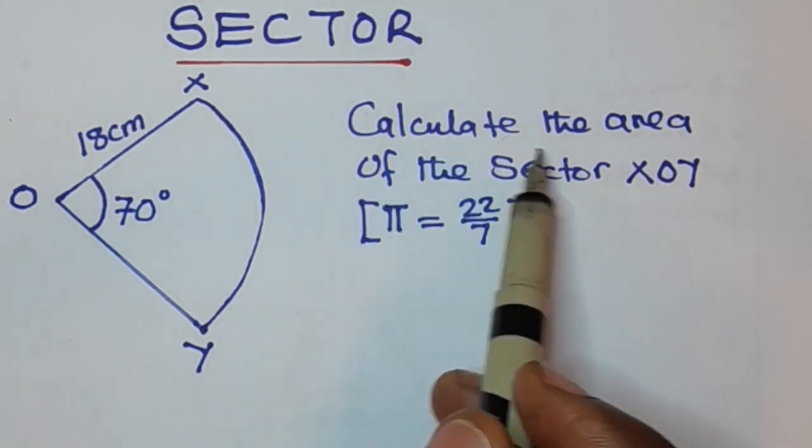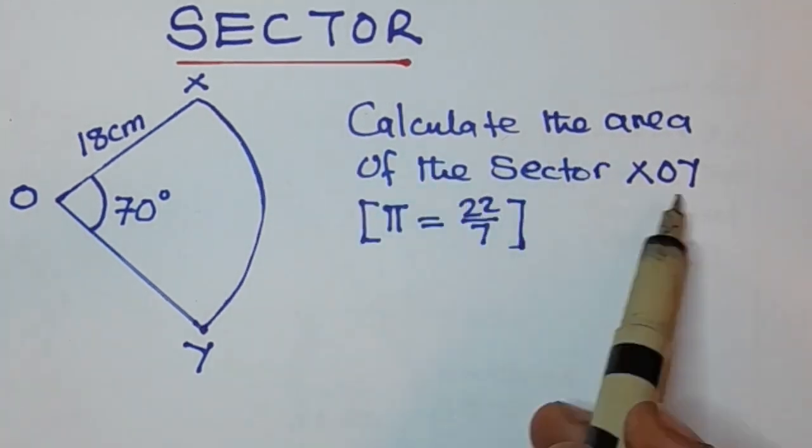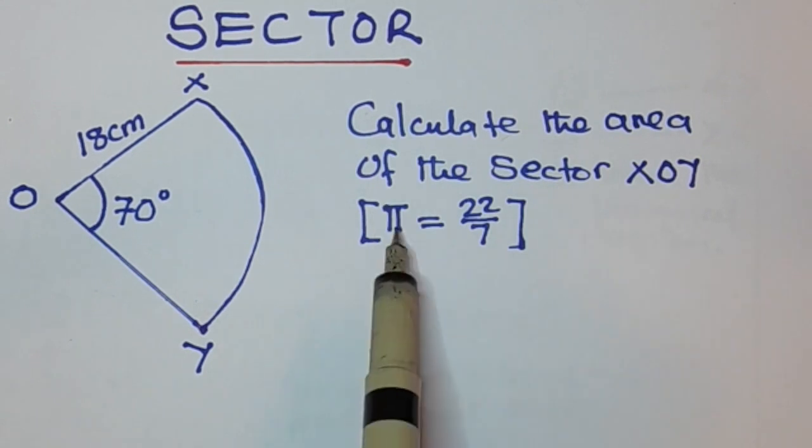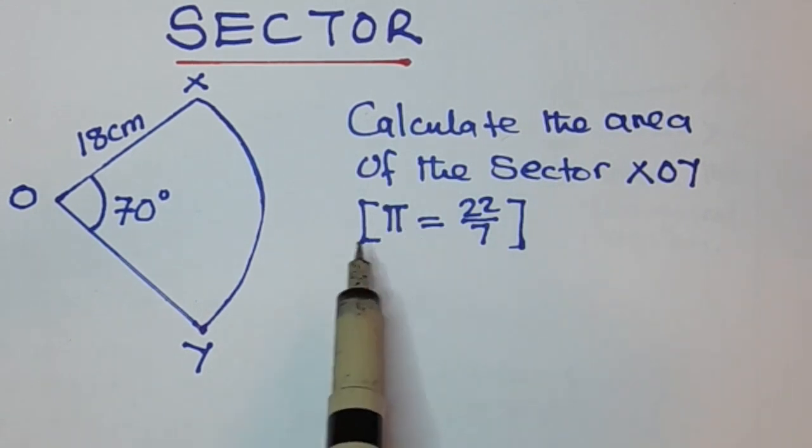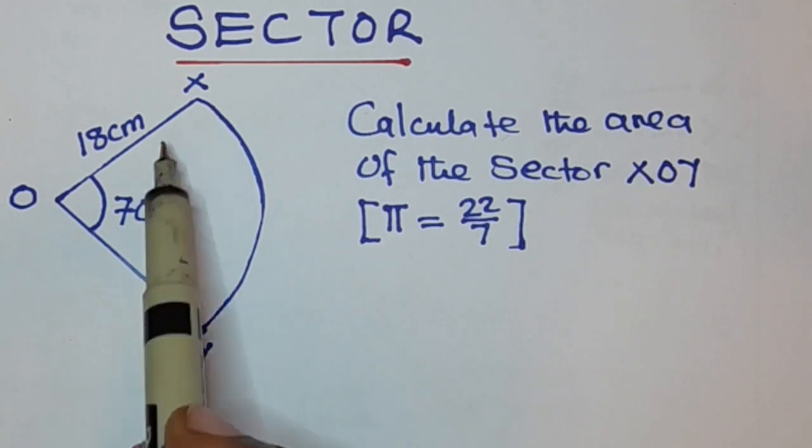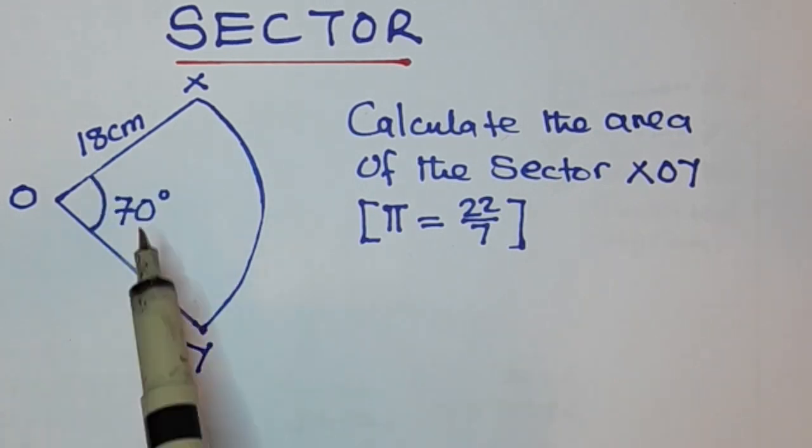So the question says, calculate the area of the sector XOY, take pi to be 22 over 7. So this is a sector with radius 18 centimeters.